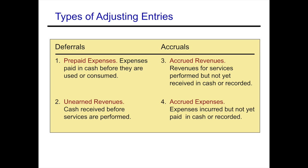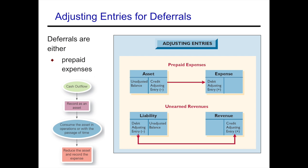Now let's look at some examples of prepaids. Prepaids are things that you have paid in advance and not yet used up. When you adjust these, that means you are now using them up and you need to expense them because you're incurring that expense. So you will credit that prepaid account — whether it's prepaid rent or prepaid utilities — and you are debiting the expense account like rent expense or utilities expense.